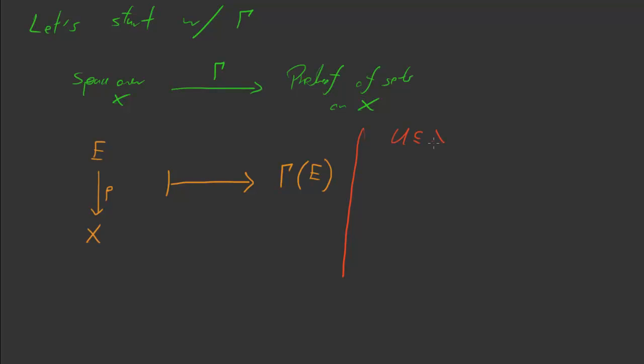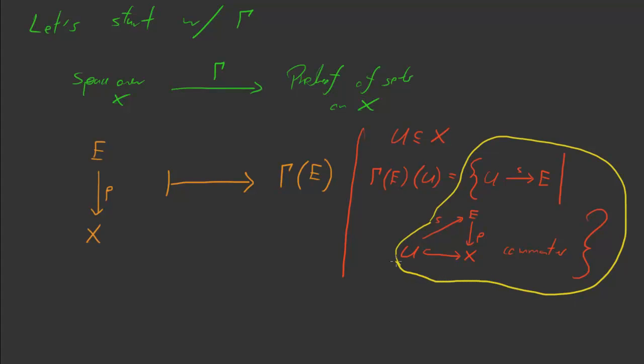So the way it's defined is as follows. Let's let u be an open set of X. And we want to define gamma of E evaluated at that open set u. And what it's going to be is the set of all continuous maps from u into the over space, the space over X, such that this diagram commutes, such that we'll have u down here, the inclusion of u into X, and we'll have E, p, s, such that this guy commutes. So that's what gamma of E evaluated at u is. It's the set of all continuous functions from u into E that make this diagram commute. This is the so-called sheaf, or I guess at this point presheaf, of sections. These maps s are called sections.